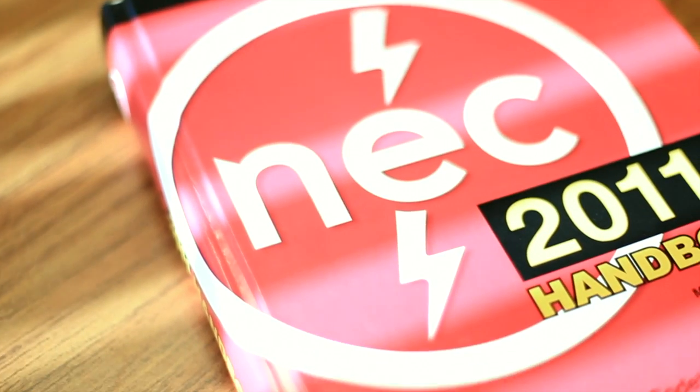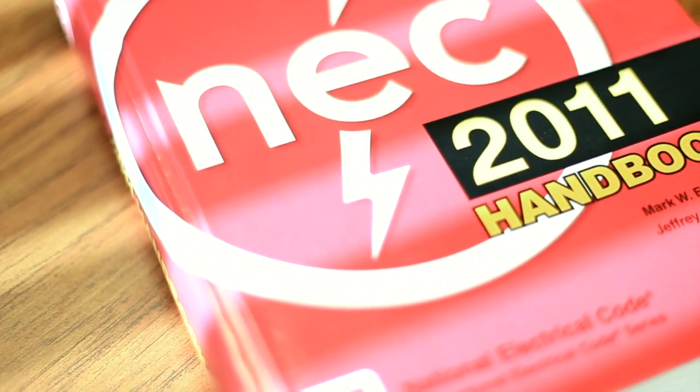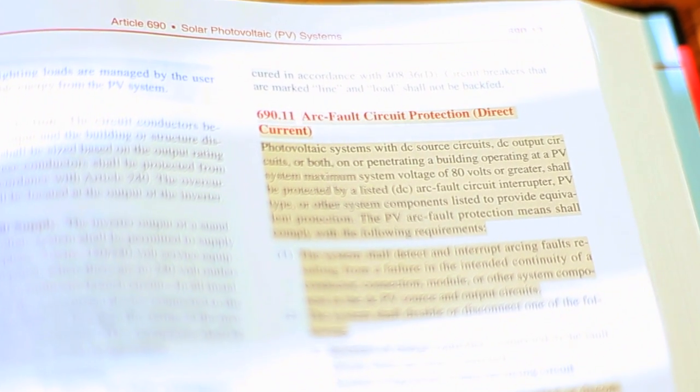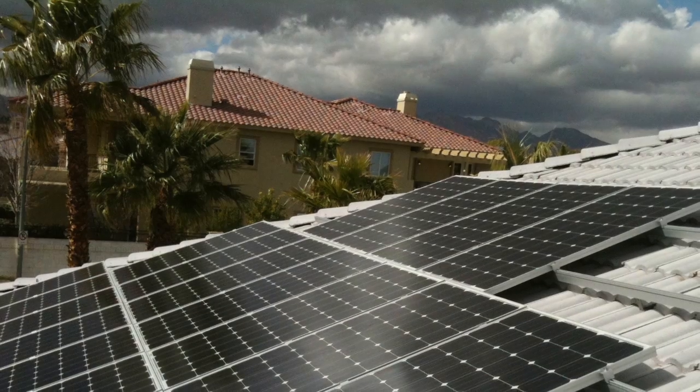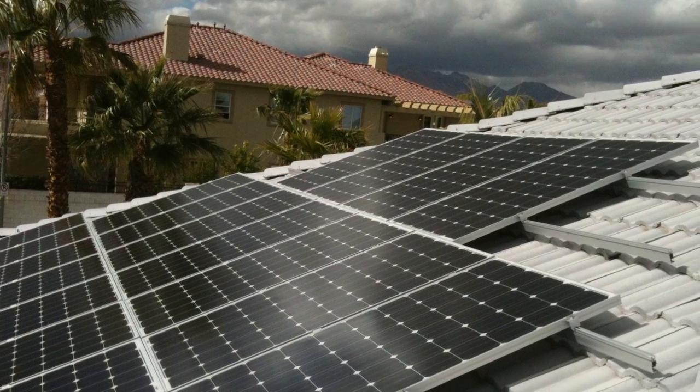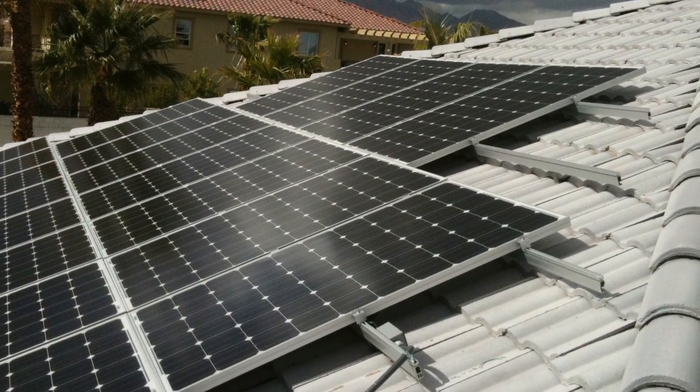The 2011 edition of the National Electrical Code requires DC photovoltaic installations to be protected by a DC arc fault device. This requirement mitigates arcing on the DC side, significantly reducing the risk of fire.